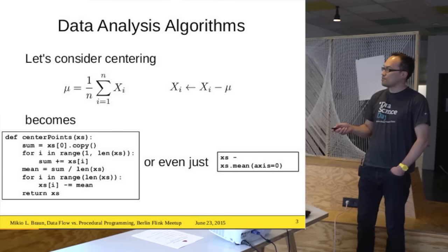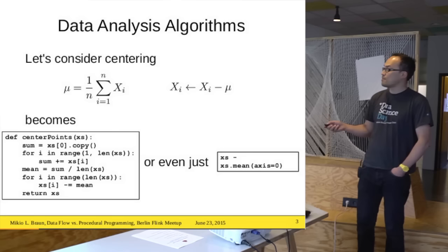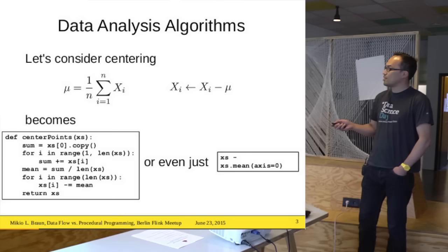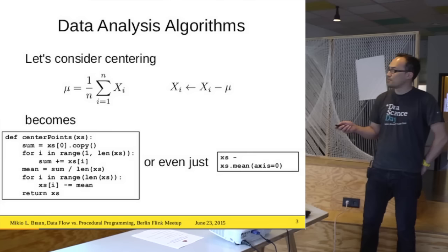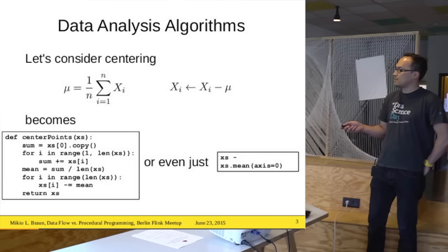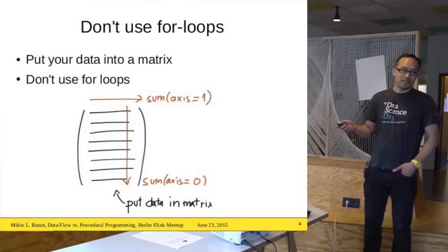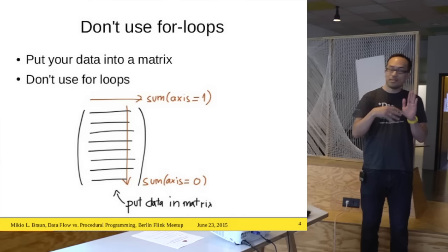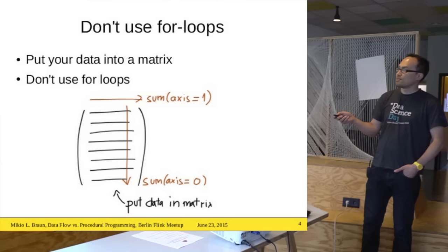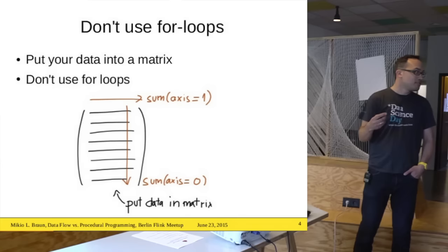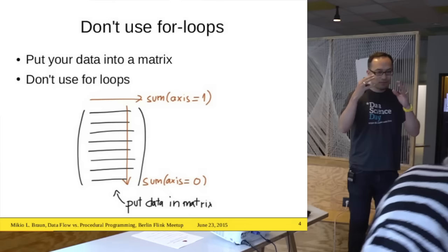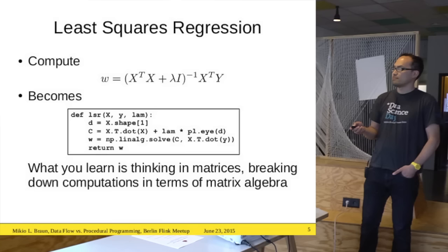Usually the first thing you learn is translating these mathematical expressions into code. These sums become for loops as before, and the replacement for each element becomes another for loop. But if you know NumPy, one thing you learn very early on is: don't use for loops. If you pack everything into a matrix, there's just a mean function and you tell it which direction to compute. The data points become rows in your matrix, and a lot of the training is actually learning how to break everything down to matrix computations to make it fast.